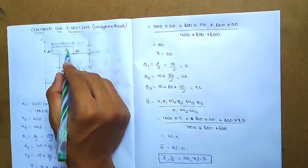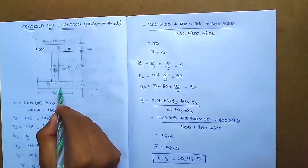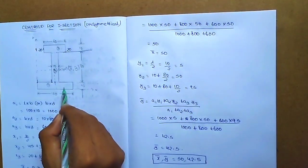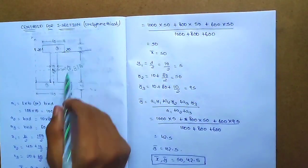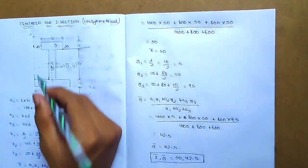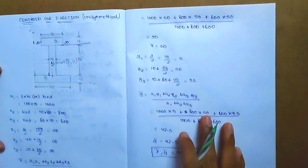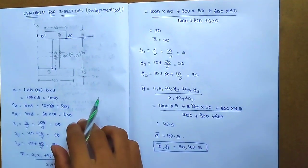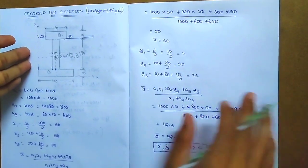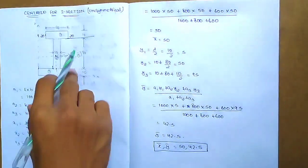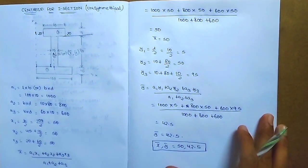The question will mention top flange, bottom flange, and web dimensions. For example, the top flange value equals 60 into 10 mm. Practice the diagrams and problem solving. This is a very important problem for 8 marks in exams — previous question papers frequently feature asymmetrical I-section centroid problems. Thank you friends.